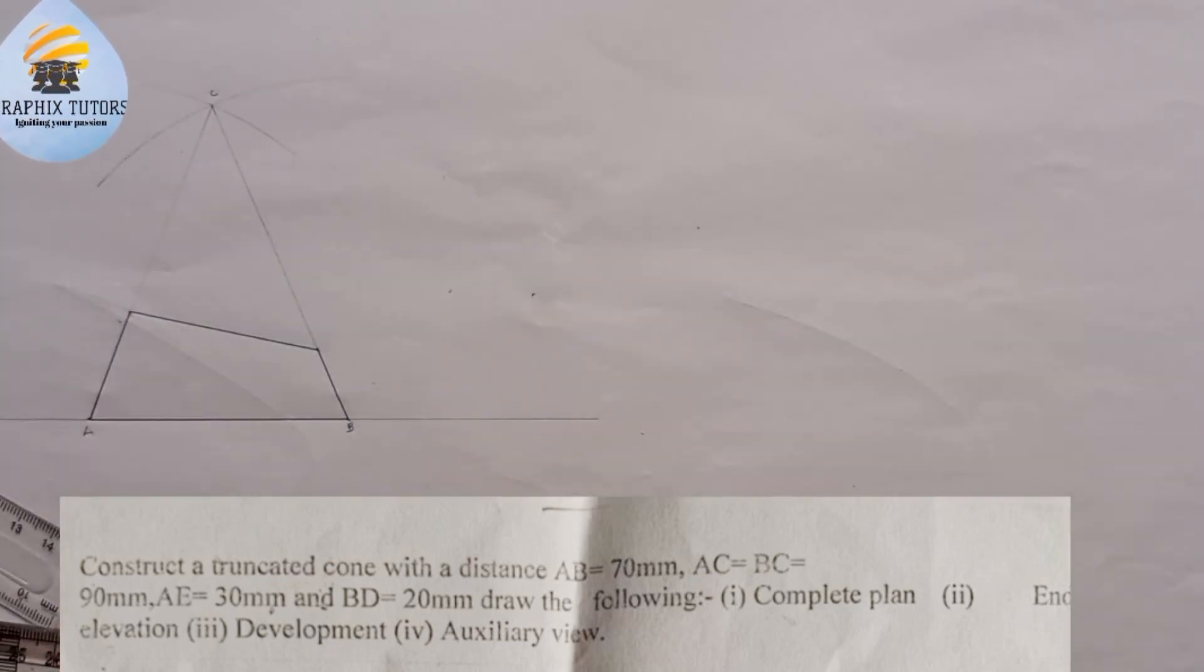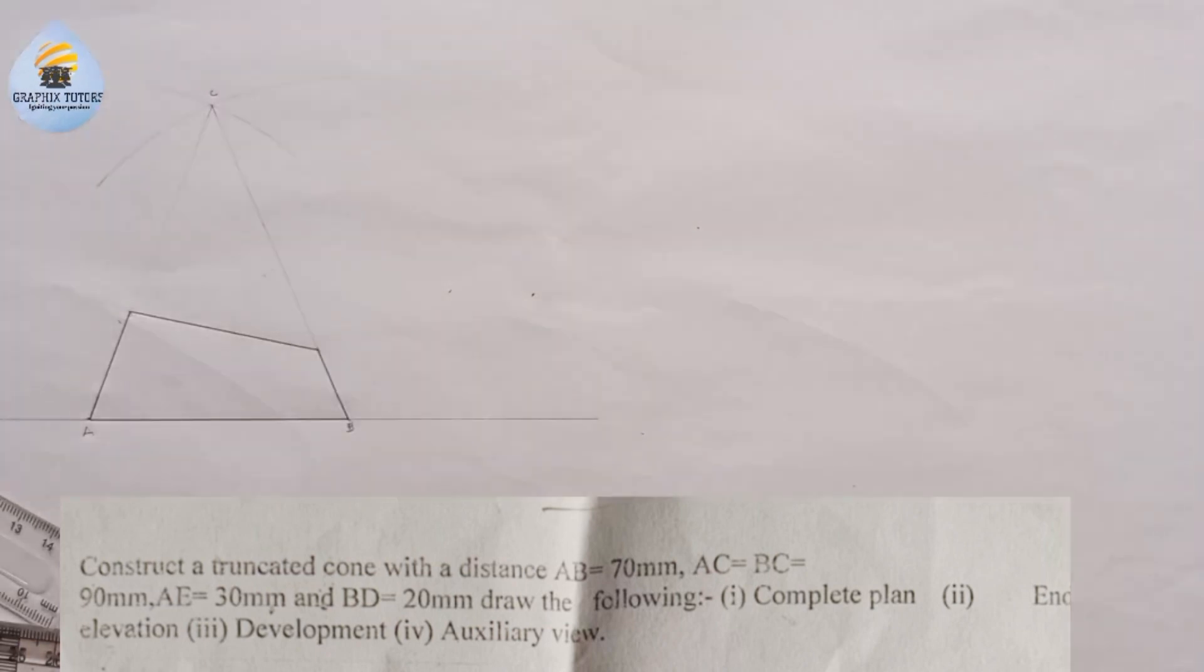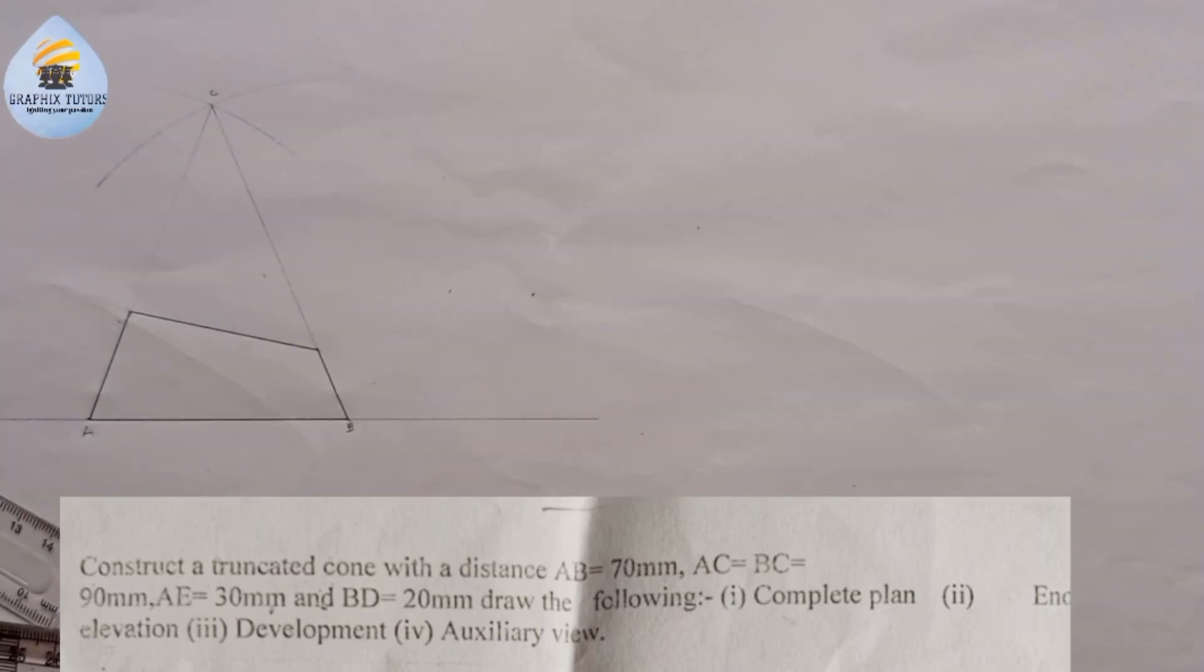This is what we have. We are now told to complete the plan, the one underneath, looking from the top. We should draw the end elevation, the end view. We should develop it and we should draw the auxiliary view.